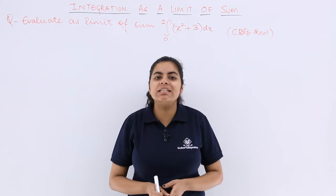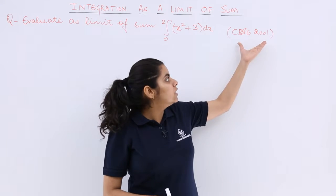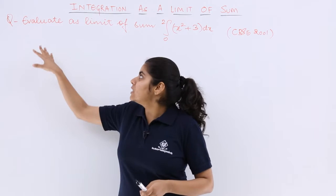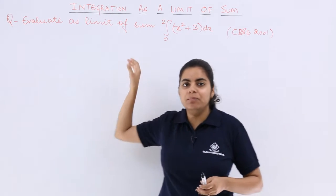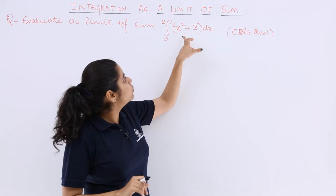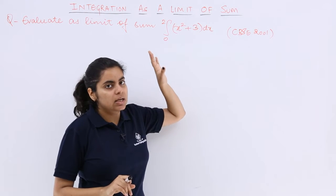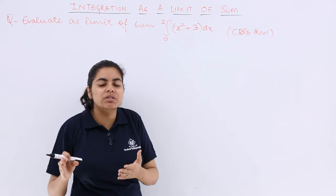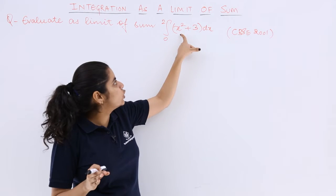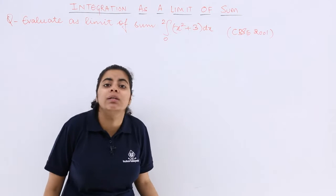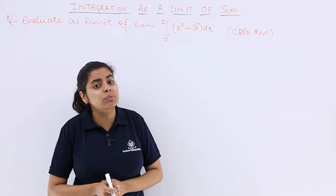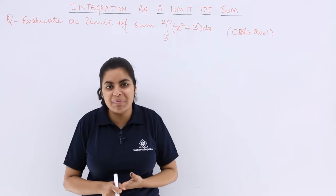This question is asked in the CBSE examination year 2001 set C. The question is evaluate as a limit of sum integral 0 to 2 x square plus 3 dx. If evaluate simply was written, we would have directly done it as x cube upon 3 plus 3x, put the limits, got the answer. But this time it is written evaluate as the limit of sum, so you have to do it by the limit of sum method only.